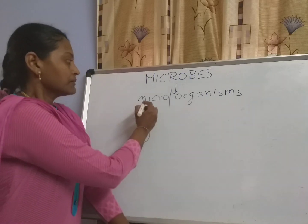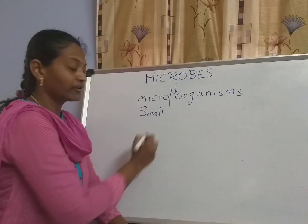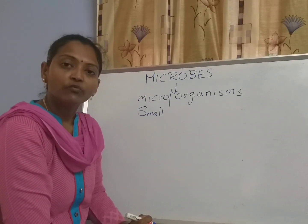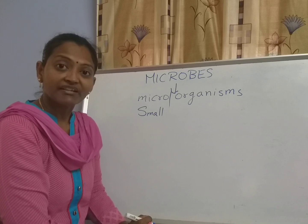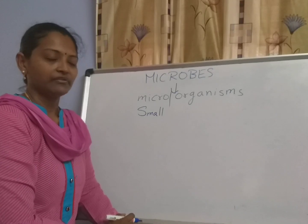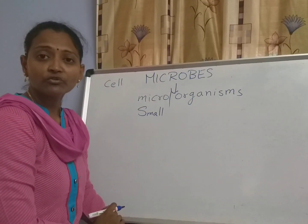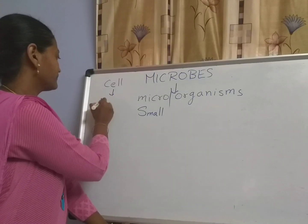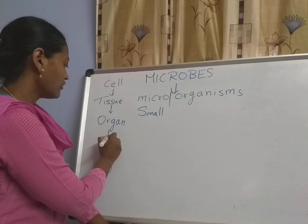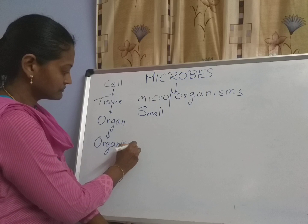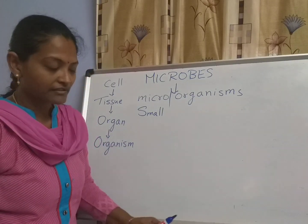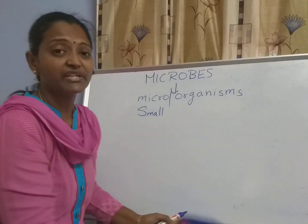See, in the word itself it is telling — micro means small or tiny. Organism is something you already learned in previous classes. An organism is made up of cells. Cell is nothing but the basic unit of life. Group of cells make a tissue, group of tissues make an organ, group of organs make an organism. So microorganism means small living organisms.